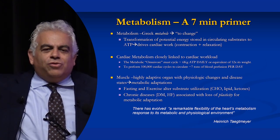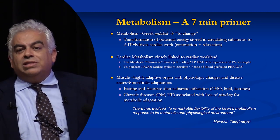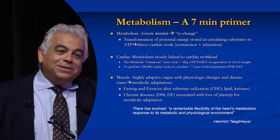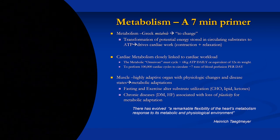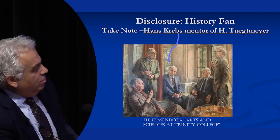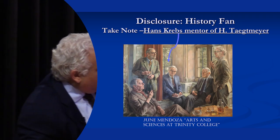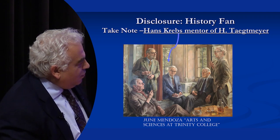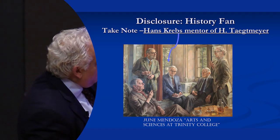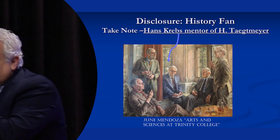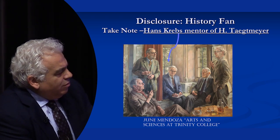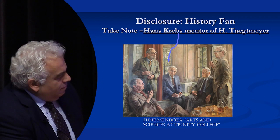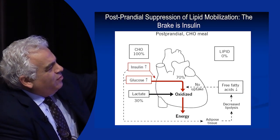The heart in most mammals can seesaw between glucose and fatty acids — and I'm going to show you the ketone hypothesis. It has to seesaw because you're a human, you have to fast sometimes, and your heart better be able to seesaw or it will run out of energy. Dr. Taegtmeyer talked about this remarkable flexibility of the heart's metabolism — that's a normal heart. A failing heart is less flexible. Hans Krebs, who was Dr. Taegtmeyer's mentor, won the Nobel Prize for medicine or physiology for the Krebs cycle.